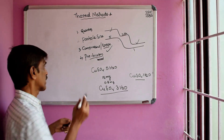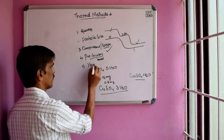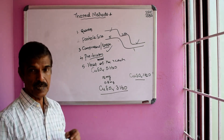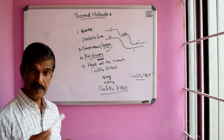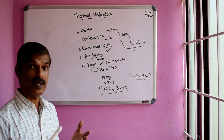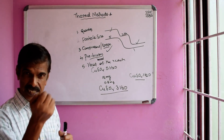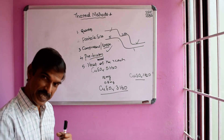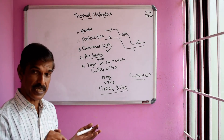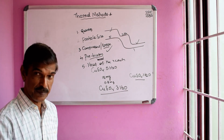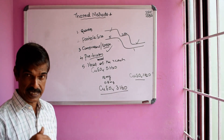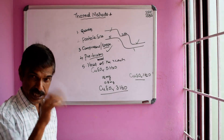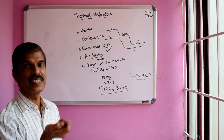Now let's consider the heat of reaction. Thermal decomposition reactions — where a solid A gives solid B plus gas C — may be exothermic or endothermic. If it is exothermic, the temperature of the sample will run ahead of the furnace temperature. If it is endothermic, the temperature of the sample will lag behind the furnace temperature.